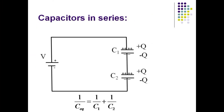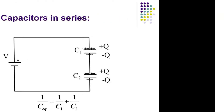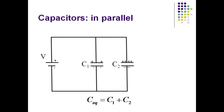When capacitors are connected in series, they all store an identical amount of charge, Q, but have different voltage drops. The equivalent capacitance is found by adding the inverses of the individual capacitors and then inverting the result. When capacitors are connected in parallel, they all have an identical voltage applied, but store different amounts of charge. The equivalent capacitance is just the sum of the individual capacitances.